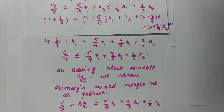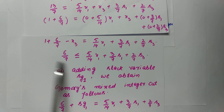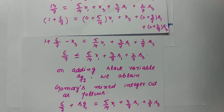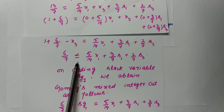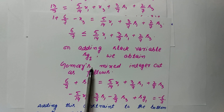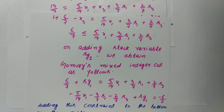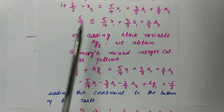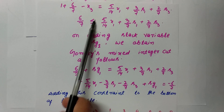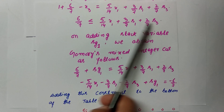Since we assumed x3 is a non-negative integer, the equation must be satisfied. Simply put, you remove the integer-integer terms, write the non-integer constant value with a less-than-or-equal-to sign, then add the slack variable sg1. So Gomory's mixed integer cut becomes: (5/14)x1 + (3/7)s1 + (2/7)s3 + sg1 = 6/7, converting the inequality to equality.